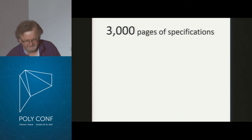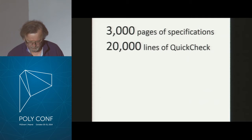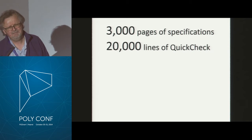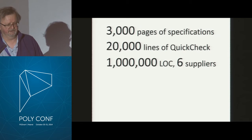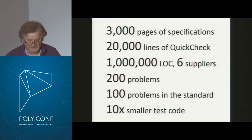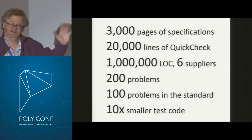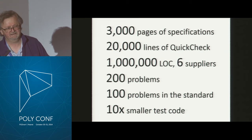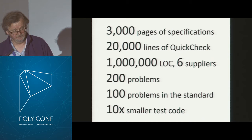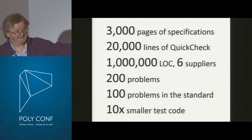We read the standard — 3,000 pages of PDFs — and turned that into 20,000 lines of QuickCheck code. We tested a million lines of C code from six different suppliers and found more than 200 problems, of which more than 100 were problems in the standard itself. Those have been fed back into the Autosar consortium. We also found that our code was 10 times smaller than a conventional test suite and tested more.